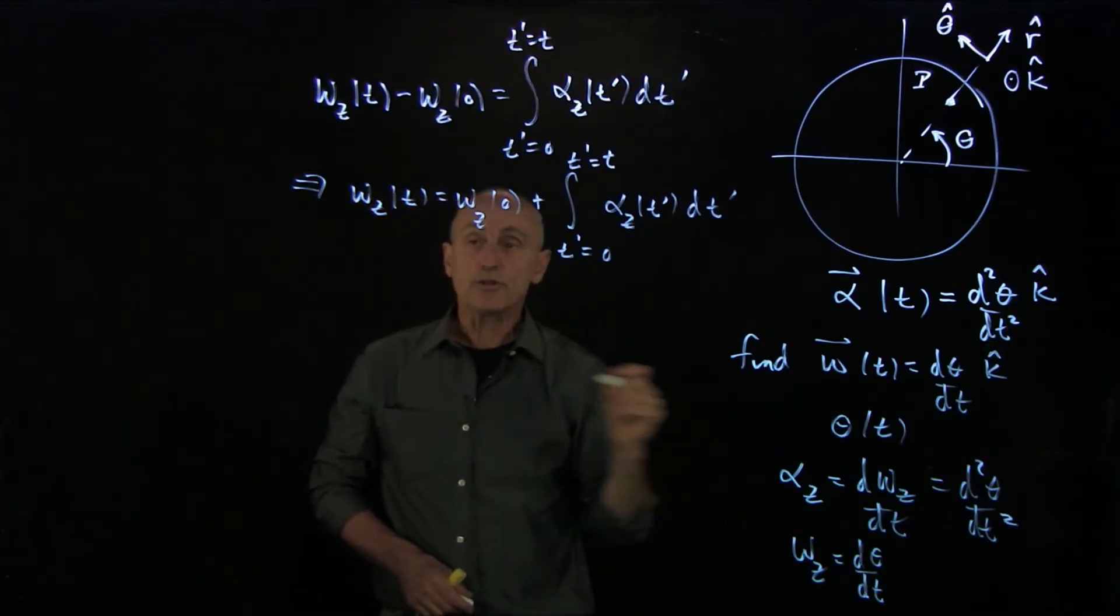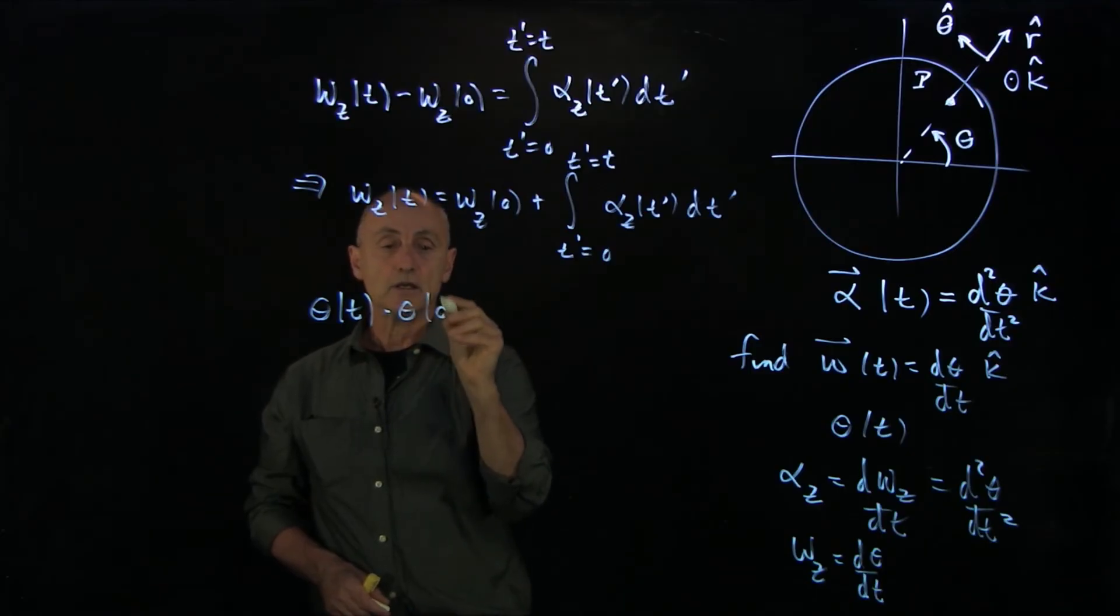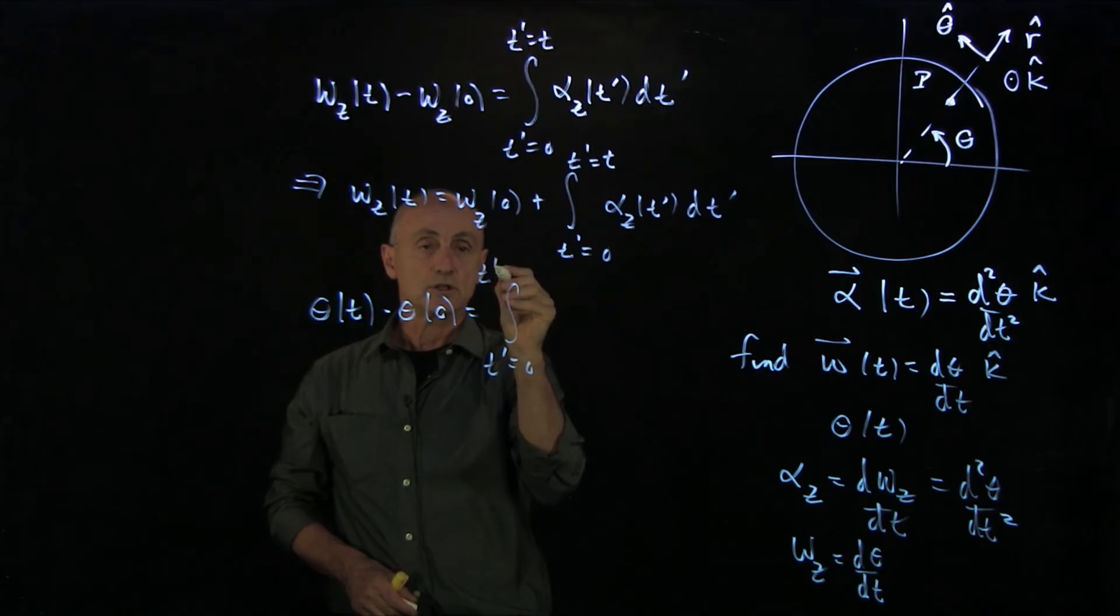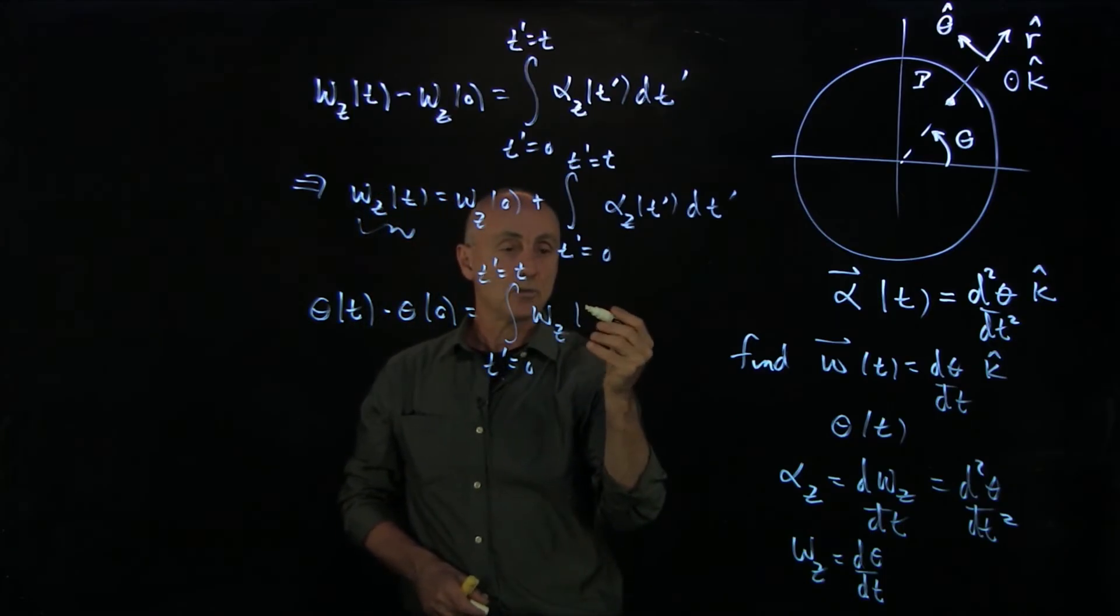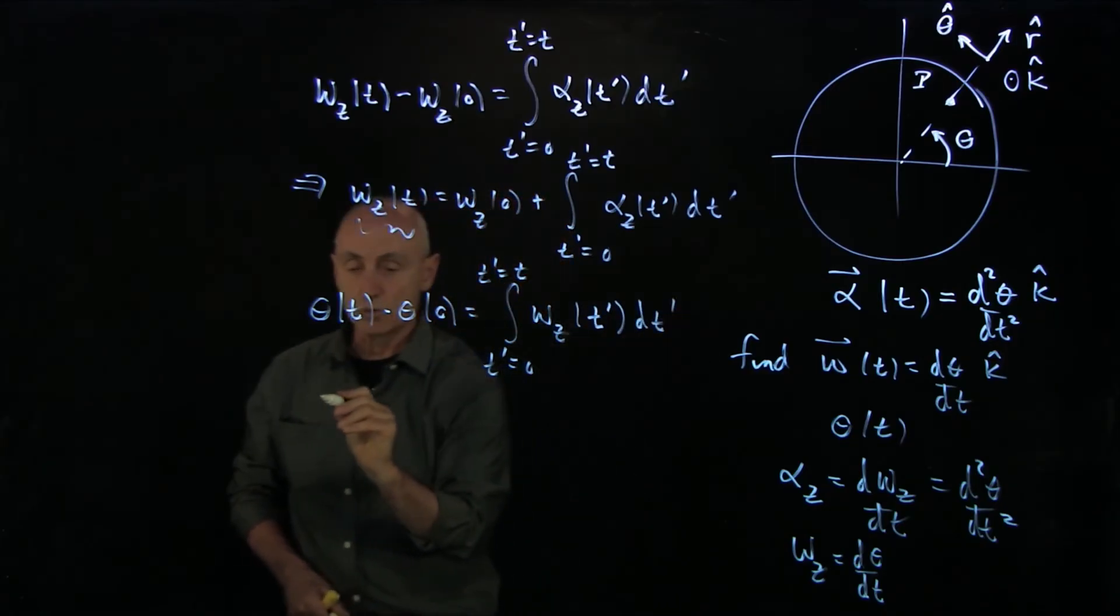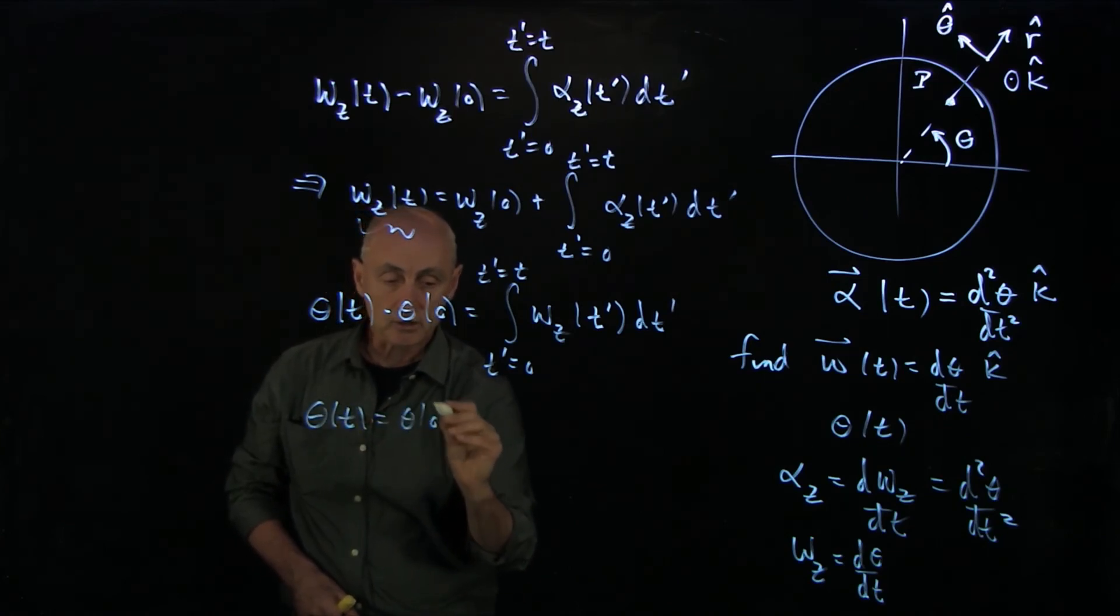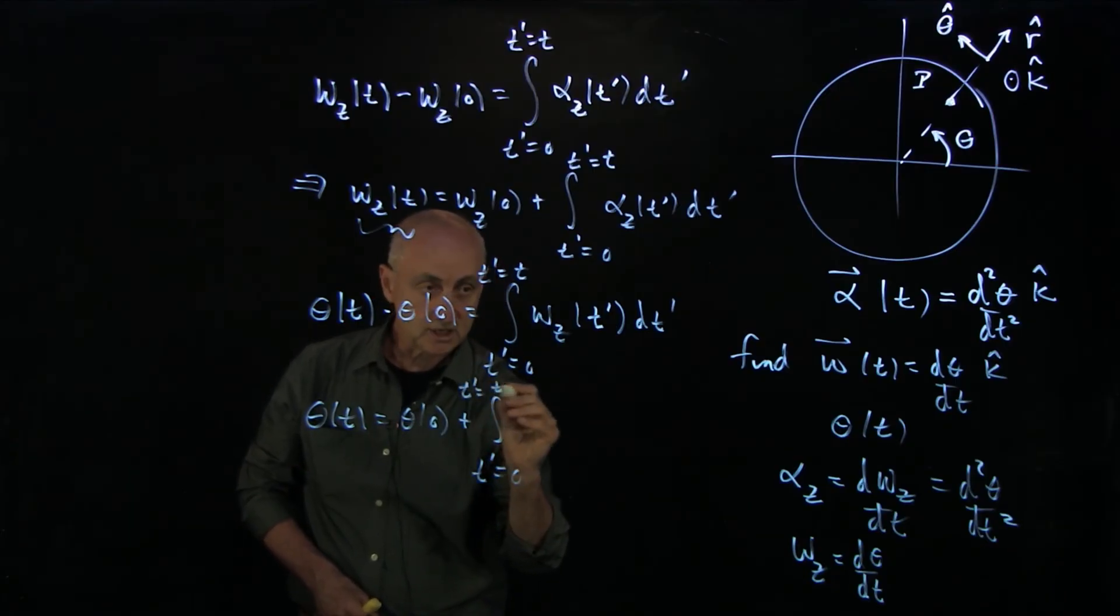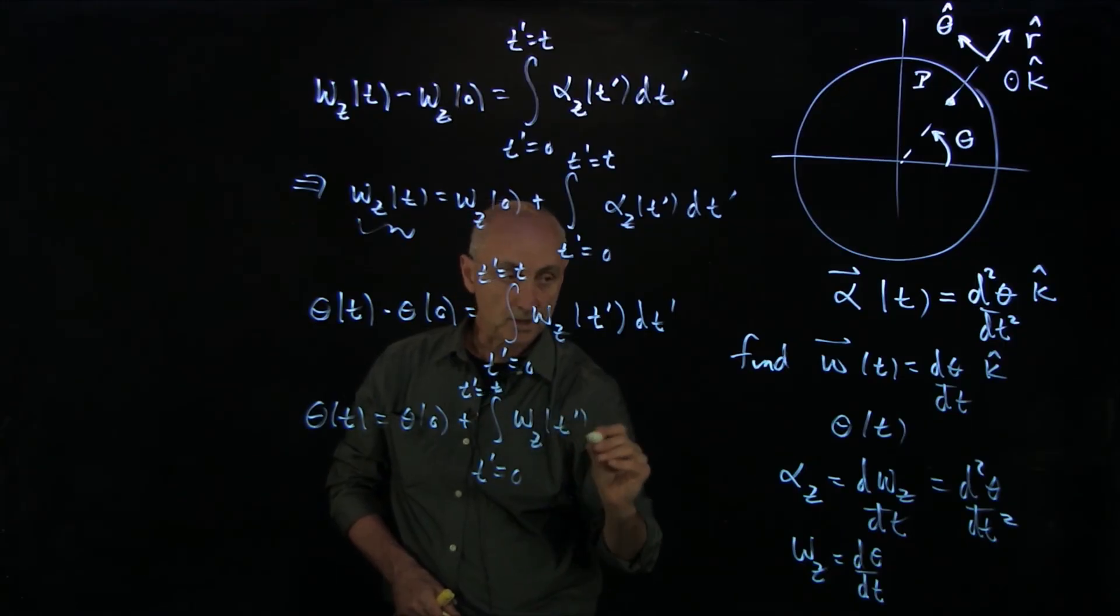In order to get the angle theta of t, we integrate again, where we have theta of t minus theta zero is the integral from t prime equals zero to t prime equals t of omega z t prime dt prime. So we see that theta of t can have some initial value plus this integral relationship.